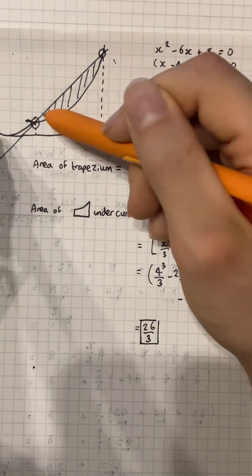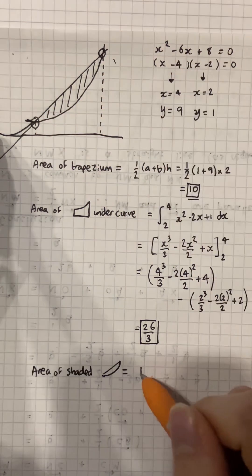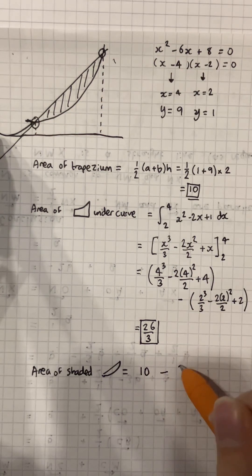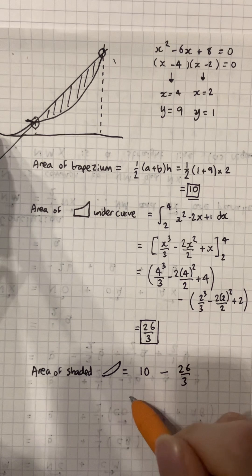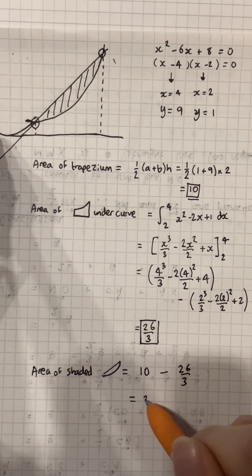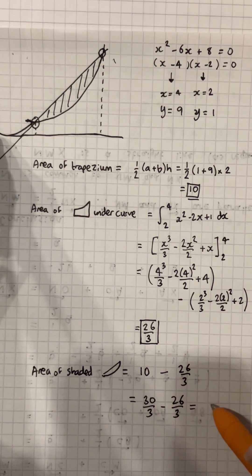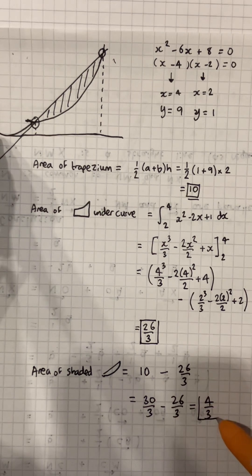The shaded area is the trapezium minus the area under the curve. We take 10 and subtract 26 over 3, giving us 30 over 3 minus 26 over 3, which gives us our final answer: 4 over 3.